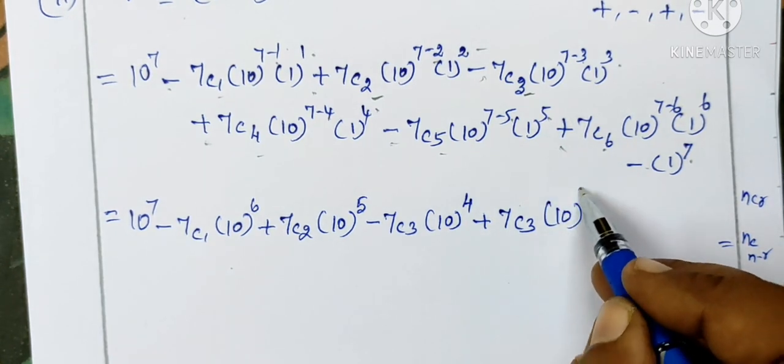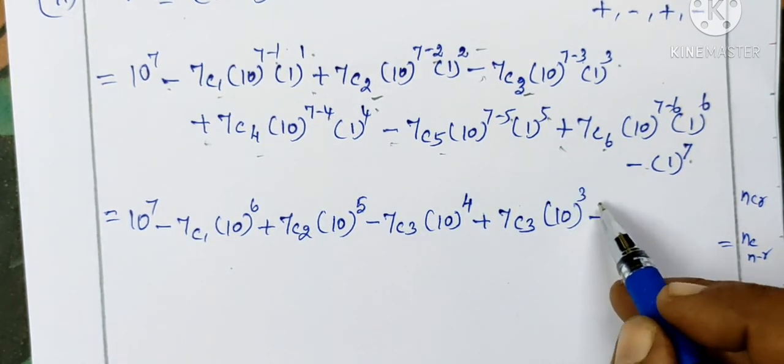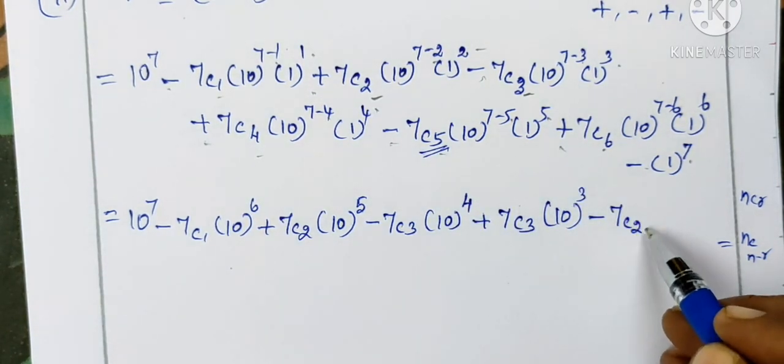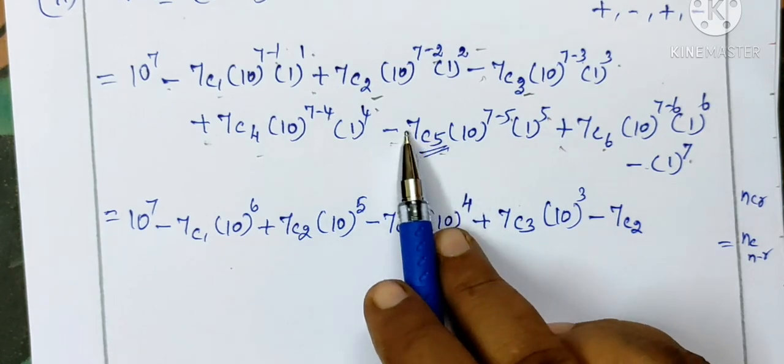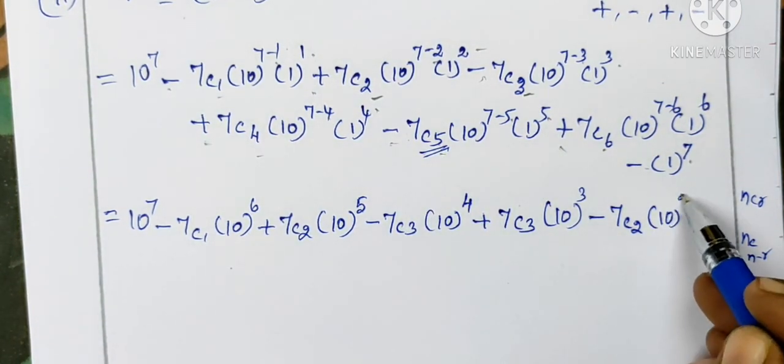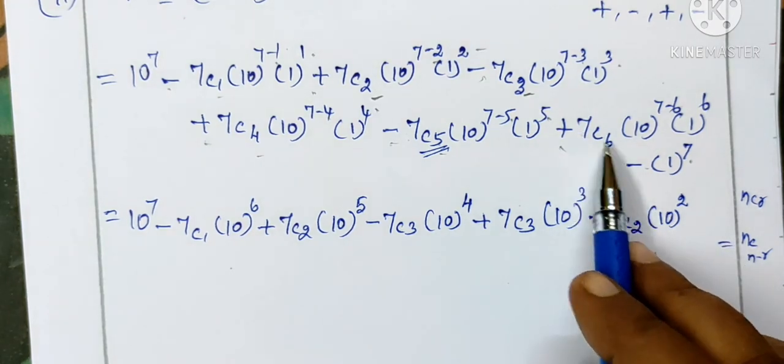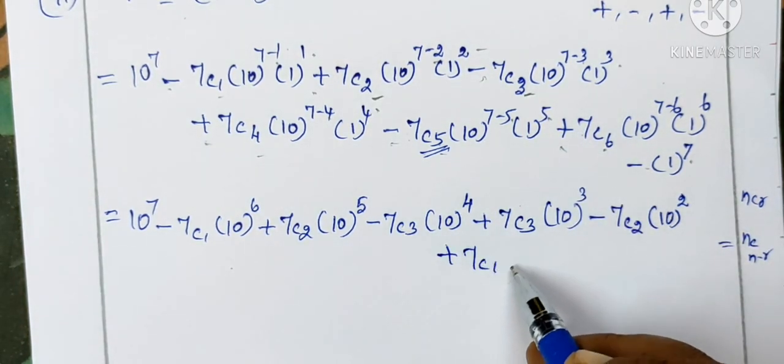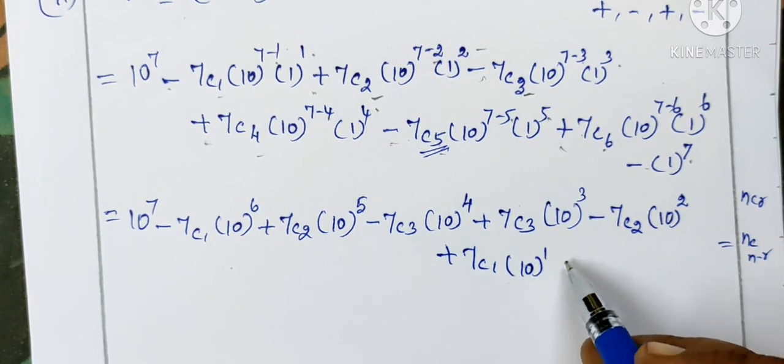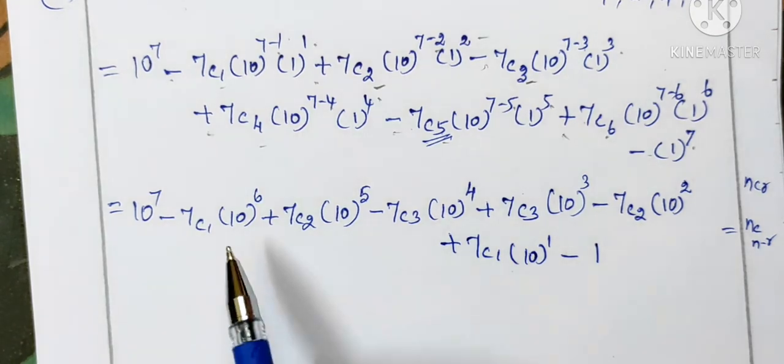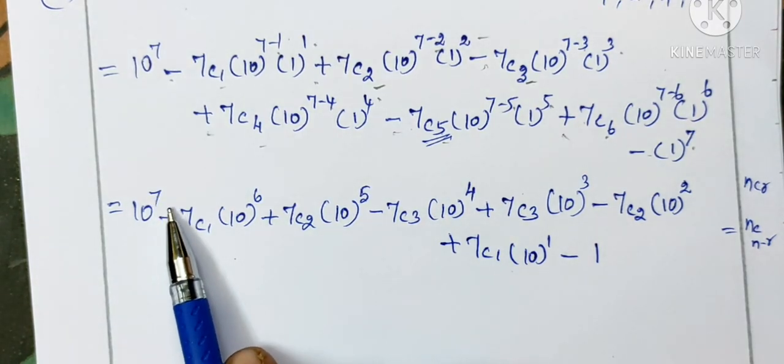So 7C3, then 10 power 7 minus 4 is 3. Then last 7C5, we write as 7C2 - smaller number. Then 10 power 7 minus 5, so 7C1, 10 power 1. Then last 1 power 7. Now check the power in descending order: 7, 6, 5, 4, then back up.